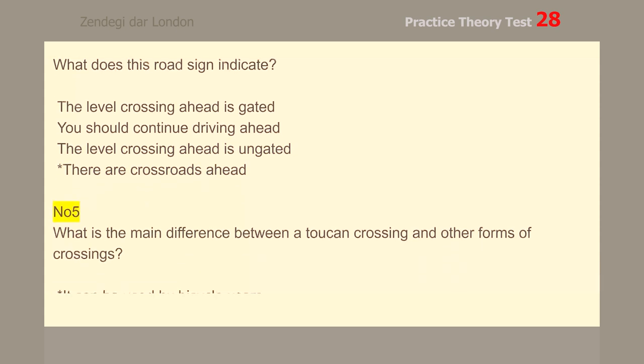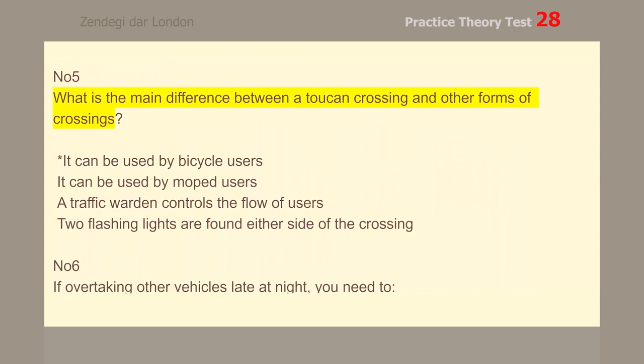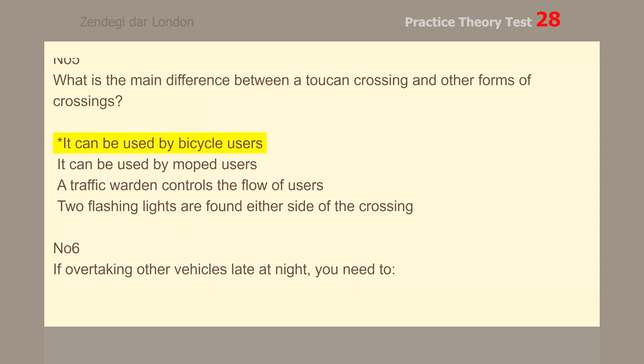Number 5. What is the main difference between a Toucan crossing and other forms of crossings? It can be used by bicycle users.